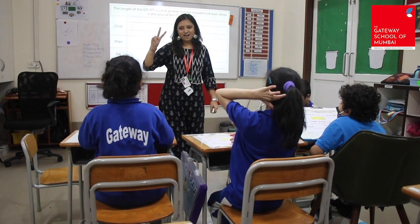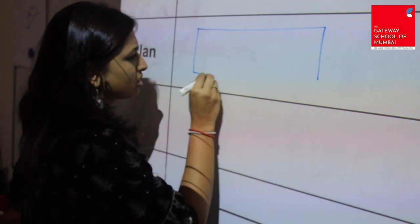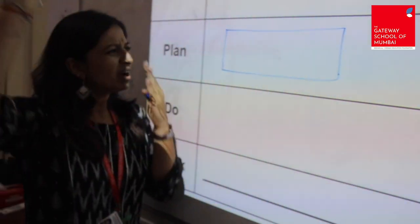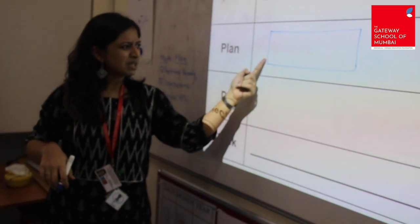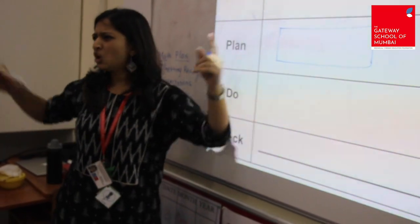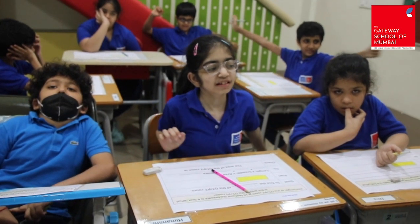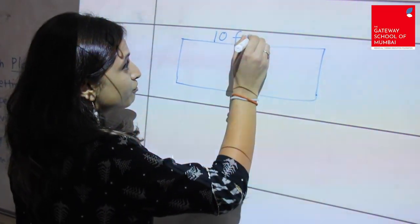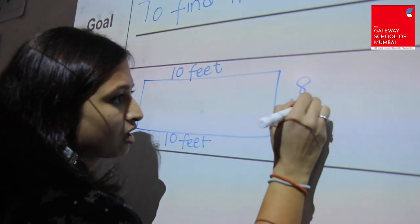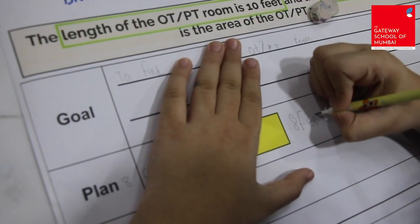The second stage is Plan. Students make sense of the problem by making a visual representation, like a drawing or a model. In this video, students have made a rectangle to show the area of a room. They can also use manipulatives so that they can solve the problem.